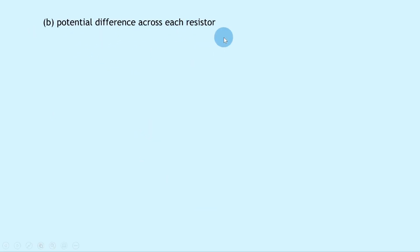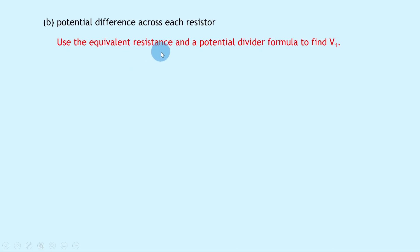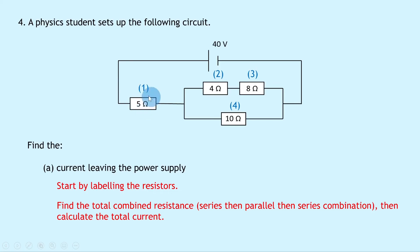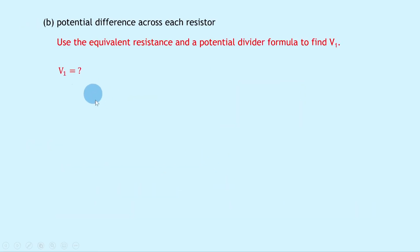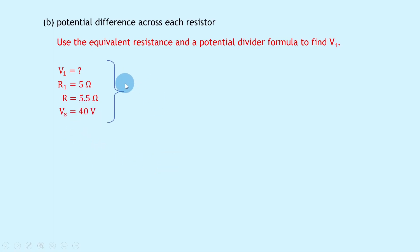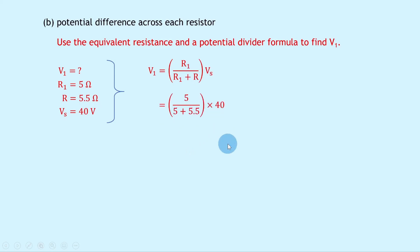Part B asks for the potential difference across each resistor. Using the potential divider formula for V1, the 5 ohm resistor: V1 equals R1 over R1 plus R times VS, which gives 5 over 5 plus 5.5 times 40, giving a final answer of 19 volts.